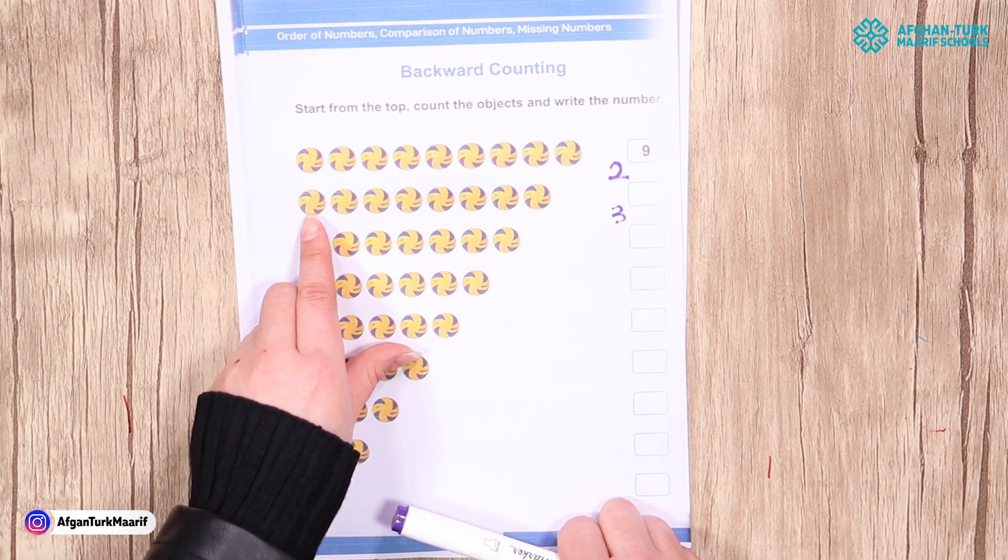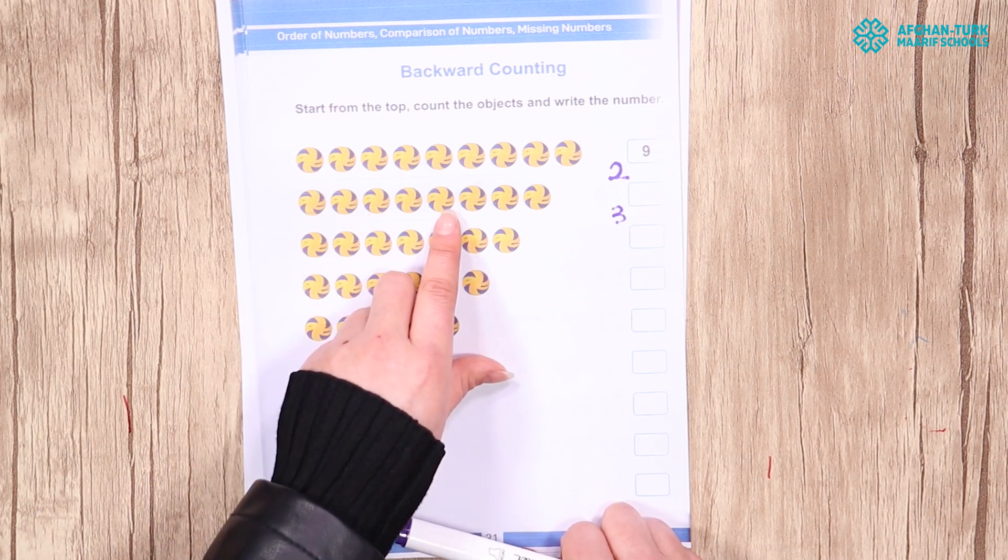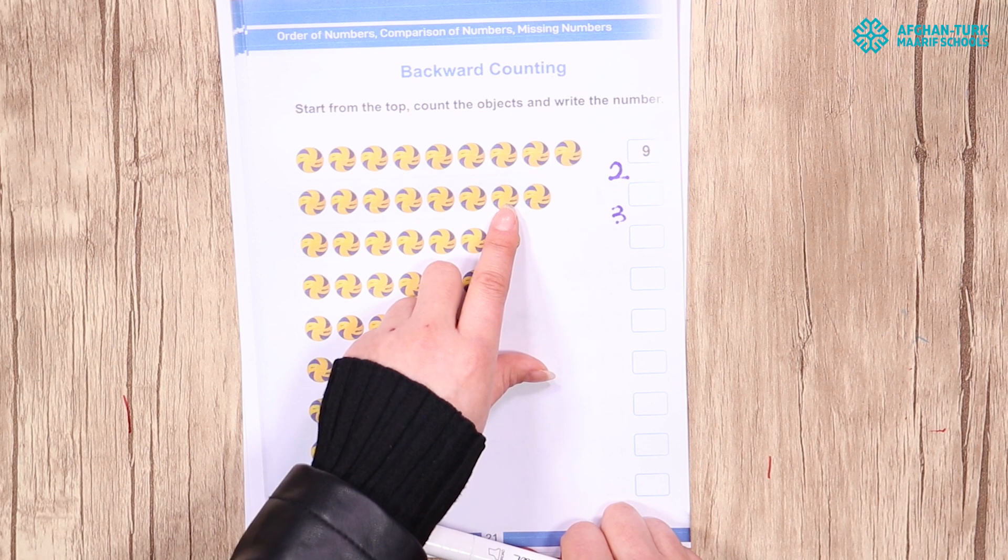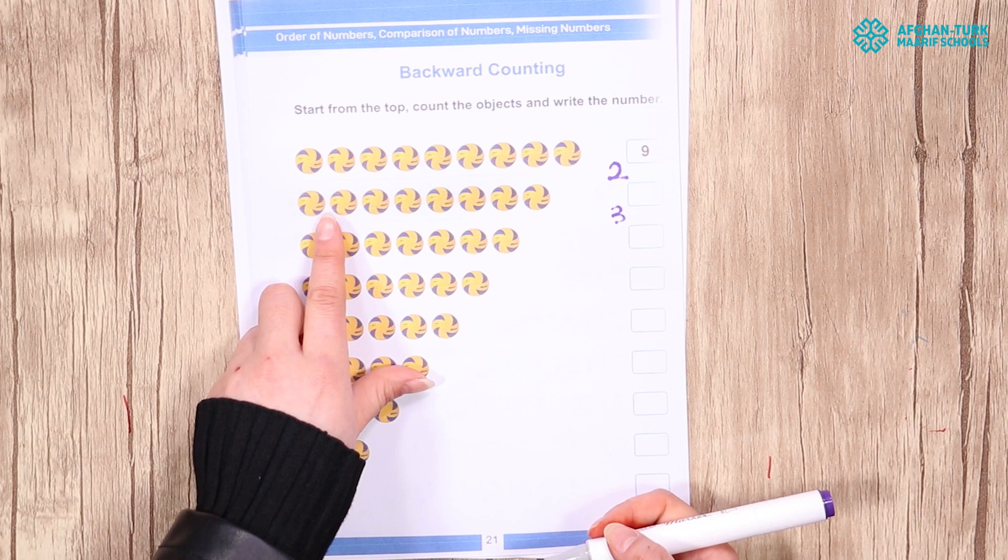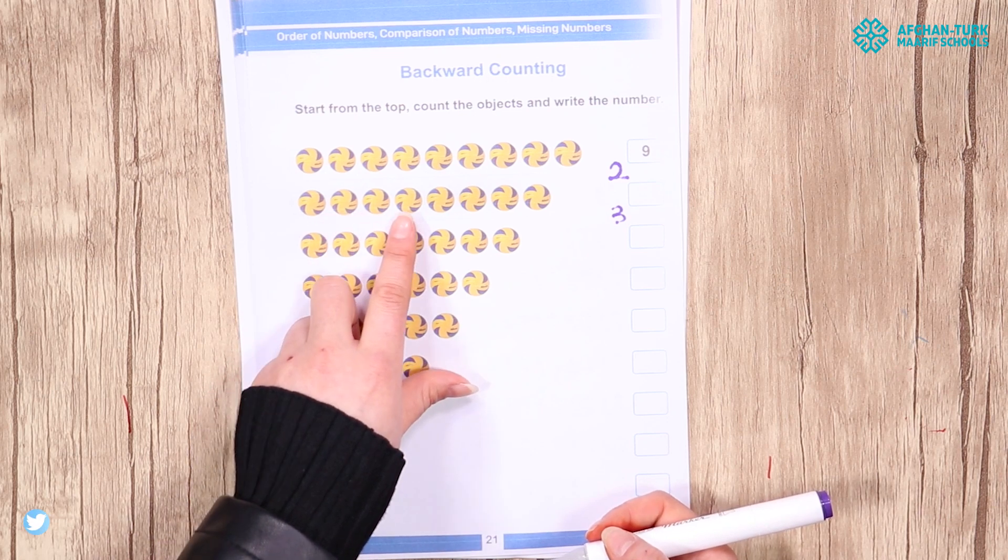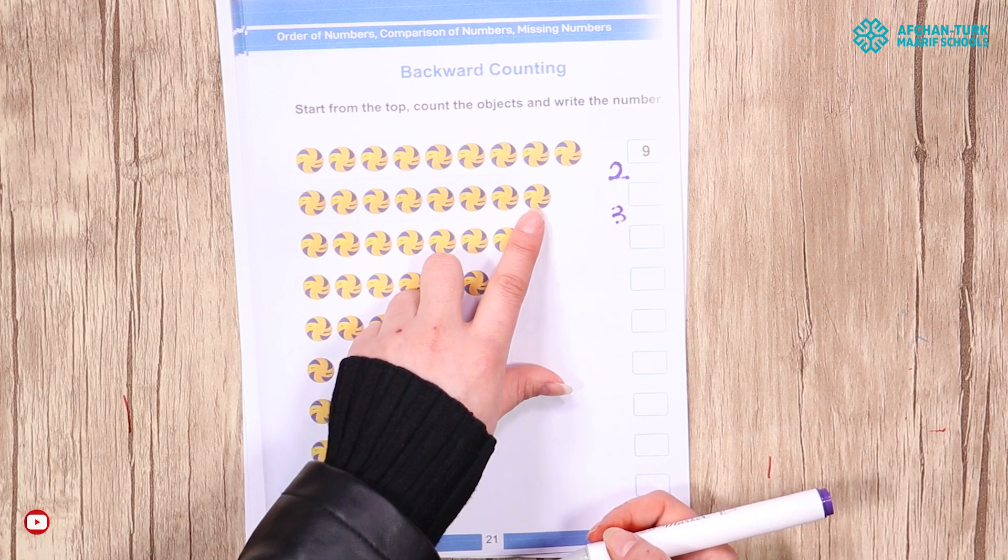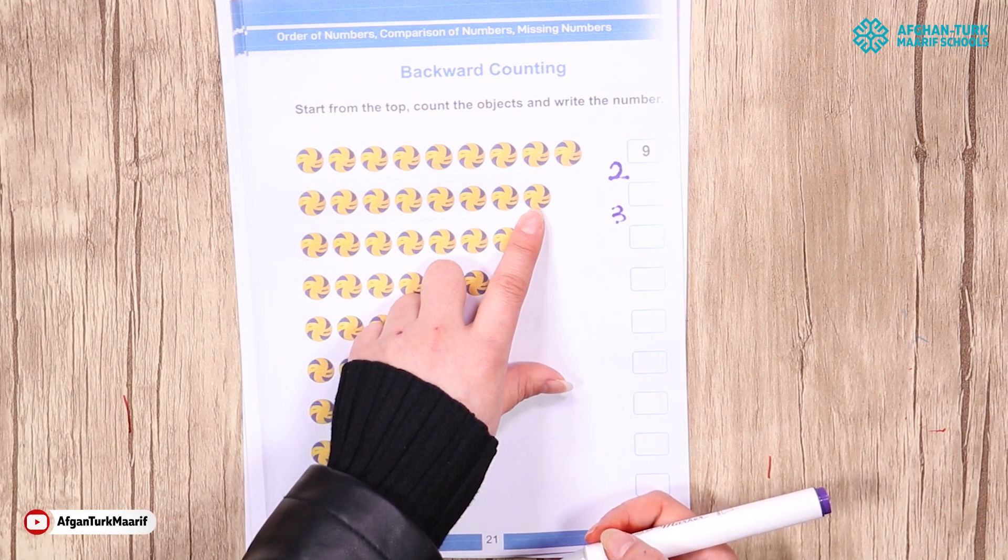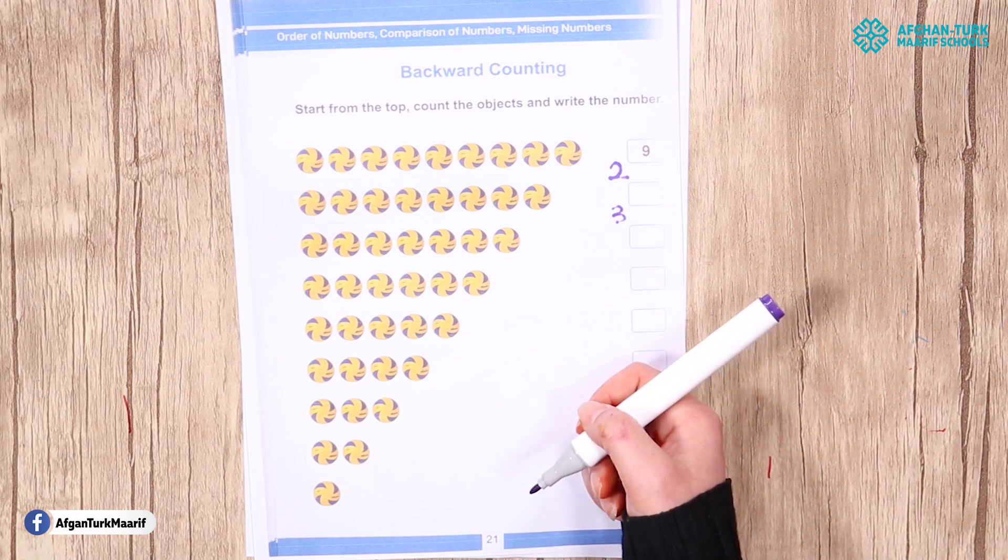How about this? 1, 2, 3, 4, 5, 6, 7. We have 7. 1, 2, 3, 4, 5, 6, 7, 8. It is 8 or 7?